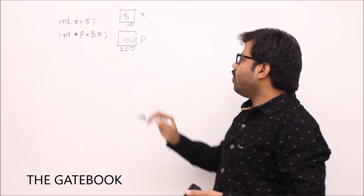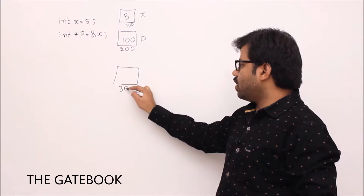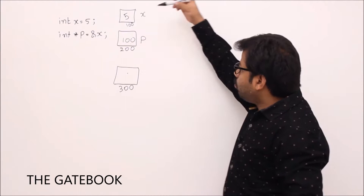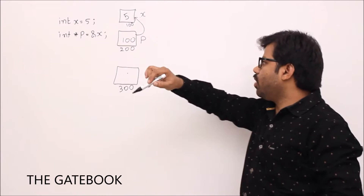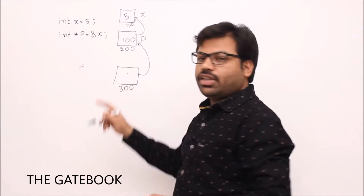This is p. What I want to say is I want to have a pointer to p. Whenever you want to have a pointer to p, you need a box — let's say that box has address 200. You should point from here to here. To point from p to x, the content of p should be the address of x. Similarly, to point from here to here, the content of this new variable should be the address of p. So that is what I write — how do I create this new pointer?